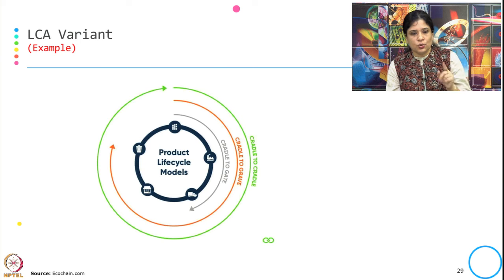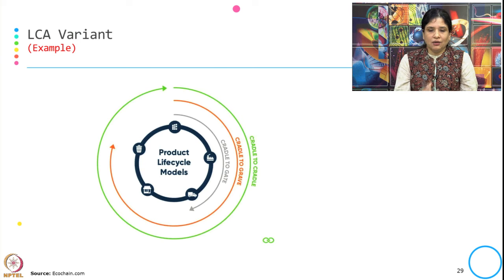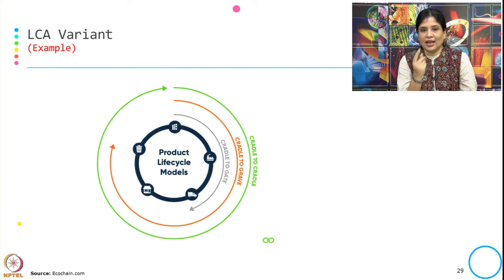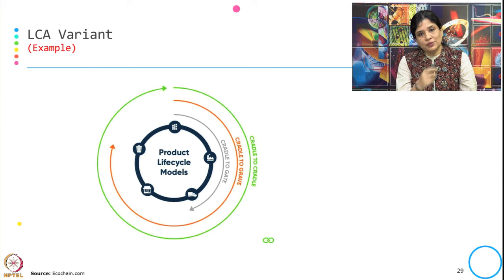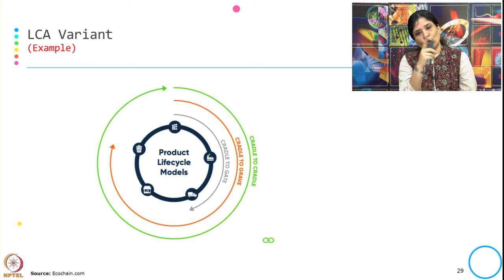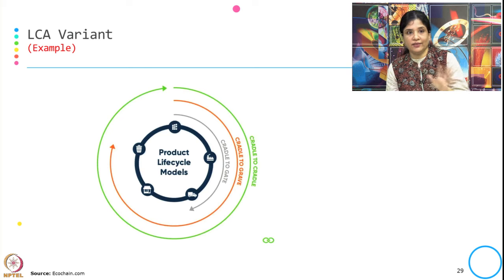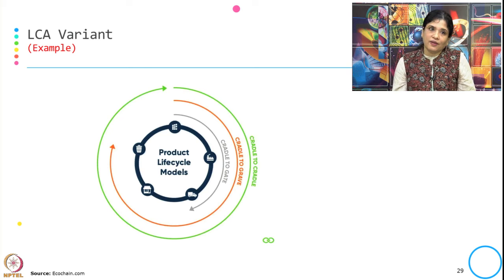This diagram shows the LCA variants across the product life cycle. Cradle-to-cradle covers the entire life cycle of the product. Cradle-to-grave stops at disposal. Cradle-to-gate goes from raw material sourcing only until the product is ready and leaving the factory gate.